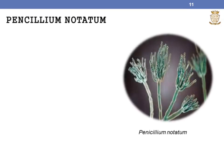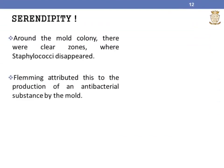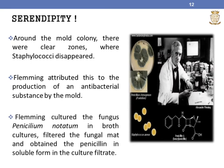One of the major breakthrough discoveries of Alexander Fleming was Penicillium notatum. In 1929, Fleming made an accidental discovery that the fungus Penicillium notatum produces an antibacterial substance which he called penicillin. Fleming was culturing Staphylococci in petri dishes and some of his cultures were contaminated with a mold, subsequently identified as Penicillium notatum. Around the mold colony, there was a clear zone where Staphylococci were disappearing. Fleming attributed this to the production of an antibacterial substance by the mold. He then cultured the fungus in broth cultures, filtered the fungal mat, and obtained penicillin in soluble form in the culture filtrate.